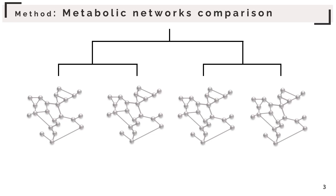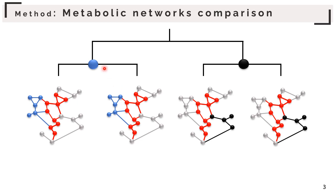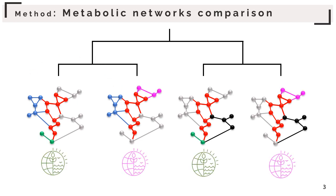To unravel the evolution of a metabolic network, we compare the metabolic networks of various species. This helps us identify modules shared by all species — here in red — and essential for life. We can also identify modules that are clade-specific, here in blue, or compare species from the same clade with different environments to identify specific environmental modules.